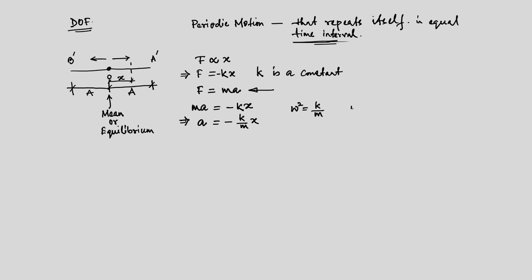Omega is the frequency. So what we ultimately get is: acceleration a equals minus omega squared times x. This means acceleration is proportional to displacement x. If we can imagine a motion where the acceleration, when the particle is at a distance x from its mean position, is proportional to the displacement — such a motion we call periodic motion.